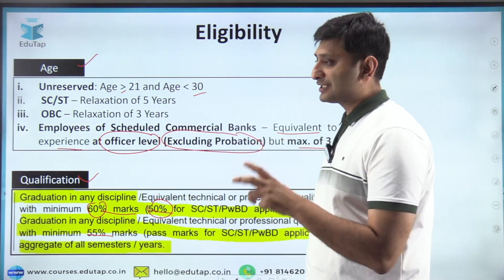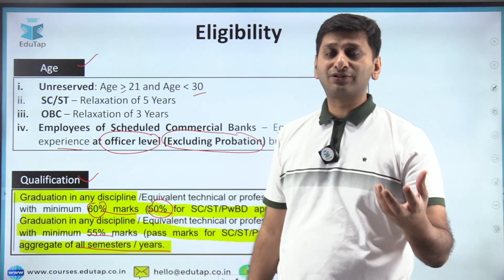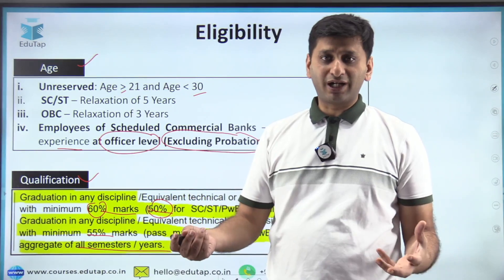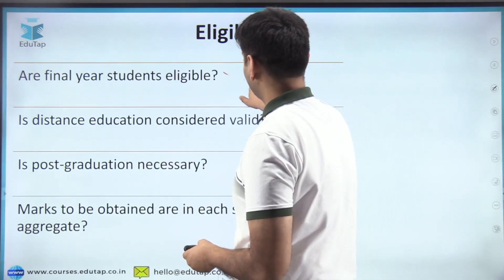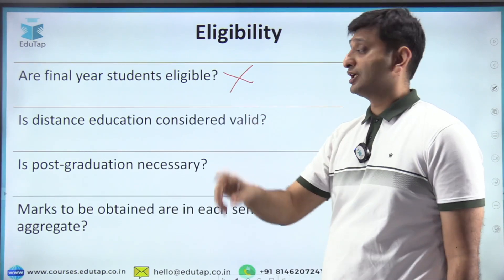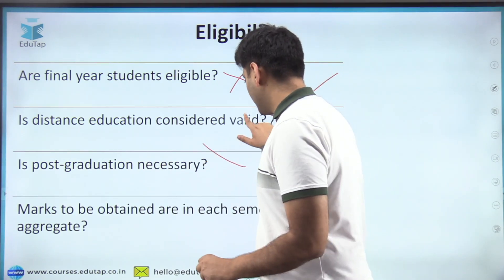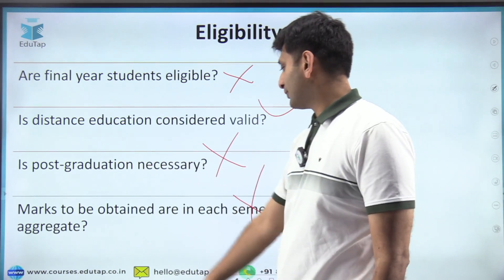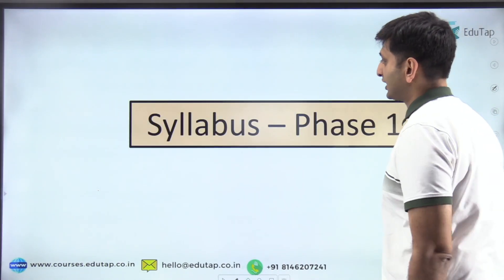These marks are aggregate of all semesters. If one semester has low marks but your overall percentage meets the required condition, you are eligible. Final year students are not eligible — you must have your final year marks when filling the form. Distance education is valid. Post-graduation is not necessary.